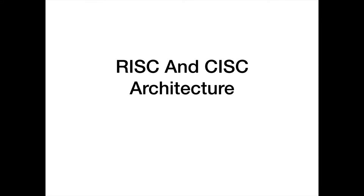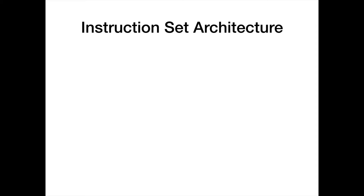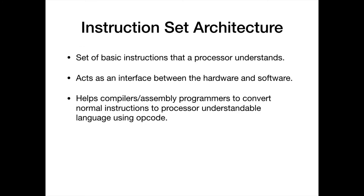Today we are going to talk about RISC and CISC architecture. Instruction set architecture is a set of basic instructions that a processor understands. It acts as an interface between the hardware and software of a system. It also helps compilers and assembly programmers to convert normal instructions to processor understandable language using operational code.